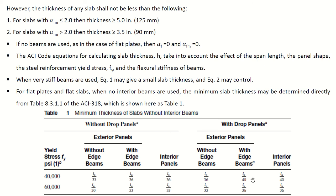If no beams are used, as in flat plates, then alpha_f equals zero and alpha_fm equals zero. The ACI code equations for calculating slab thickness h take into account span length, panel shape, steel reinforcement yield stress fy, and the flexural stiffness of beams. For flat plates and flat slabs with no beams, minimum slab thickness is determined directly from Table 8.3.1.1 of ACI, shown in Table 1.